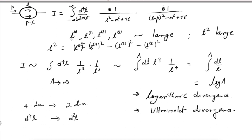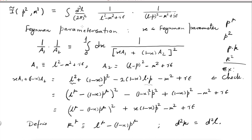This is the integral we were looking at in four dimensions. It is ultraviolet divergent and it diverges logarithmically. To avoid that complication we work in two dimensions where this integral will converge, as we can see by power counting. That is why you have D²L here — the propagators are the same but we are working in lower dimensions.